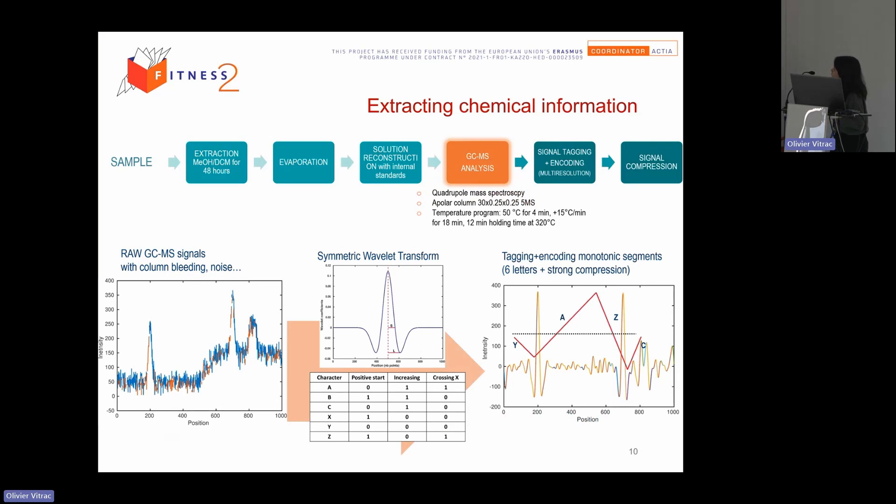So the first step we need to extract chemical information. We have the sample, plastic sample, carton sample. We make the total extraction by using the strong solvent, dichloromethane here. We evaporate to get better resolution, to get better concentrations. We add some internal standards and we launch GC-MS analysis with a simple program.